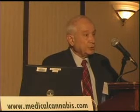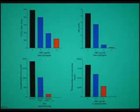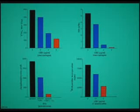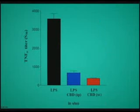The answer is absolutely yes. Cannabidiol reduces the formation of TNF. It reduces the formation of nitric oxide, which is also involved in inflammation. It's also involved in chemiluminescence, which is the method for looking at reactive oxygen intermediates. So that was in the test tube, and we looked in vivo whether cannabidiol does that in the whole animal.